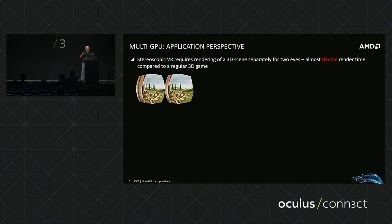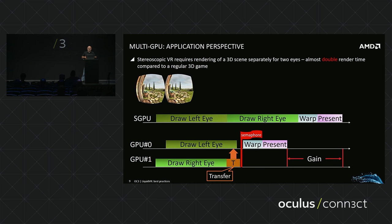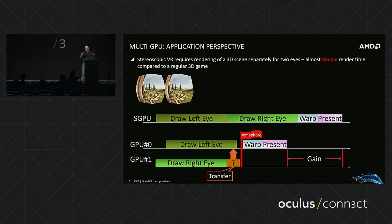From an application perspective: with a single GPU, your timeline has left eye render, then right eye render, warping, then presentation. With two GPUs, you spread the job between both — there's an additional transfer from GPU 1 to GPU 0 so you can present everything together, since presentation happens on GPU 0. You synchronize between the two GPUs, and in the end you get a nice gain. The more GPU-bound your content, the more heavy the content, the more gain you get.